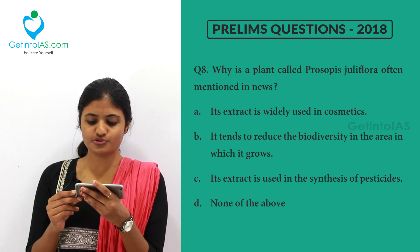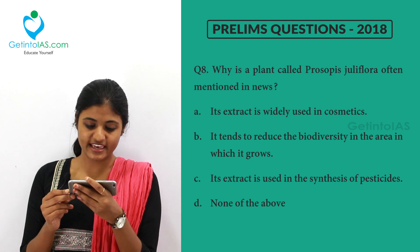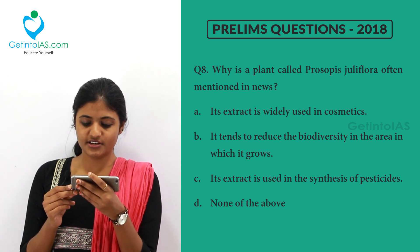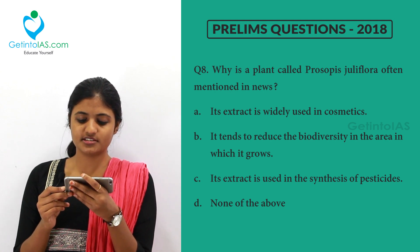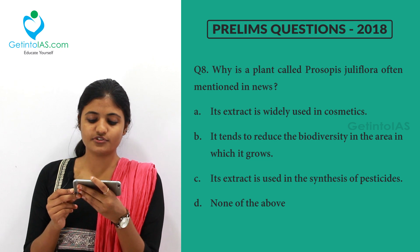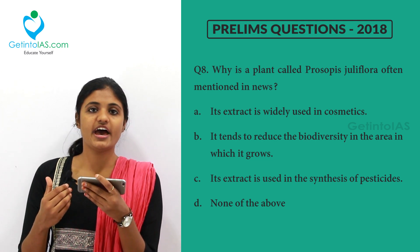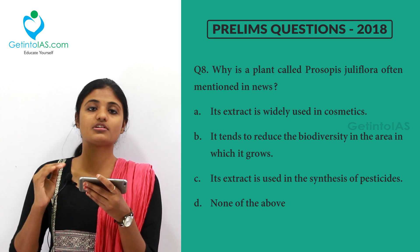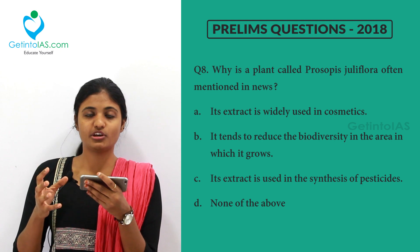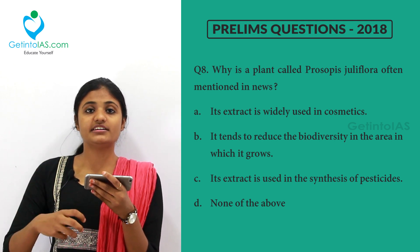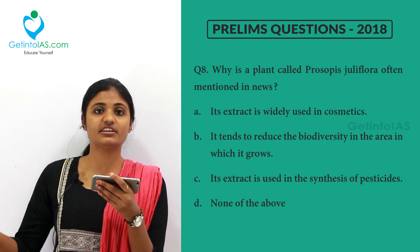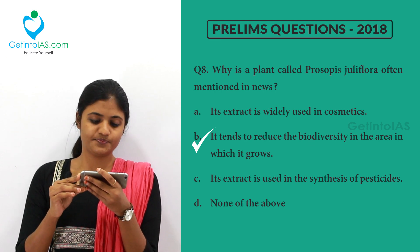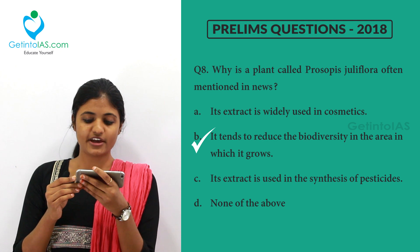The next question asks why the plant called Prosopis juliflora is often mentioned in the news. The options are: it is widely used in cosmetics, it tends to reduce the biodiversity in the area in which it grows, its extract is used in the synthesis of pesticides, or none of the above. Prosopis juliflora is an invasive species — locally called seemai kharuvelum — found abundantly in Tamil Nadu. The government took measures to remove this invasive species because it started killing the biodiversity of that area and was consuming a lot of groundwater, not leaving other plants to grow.